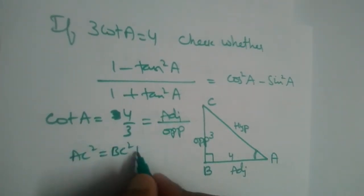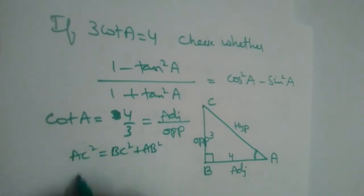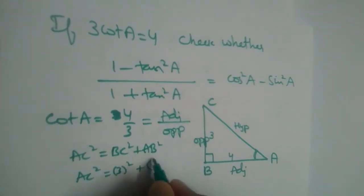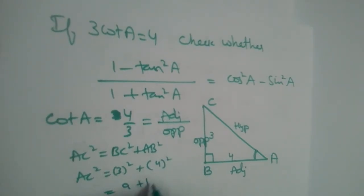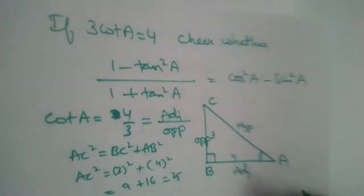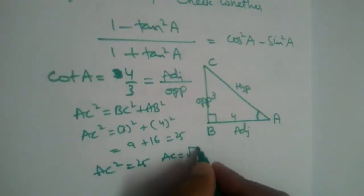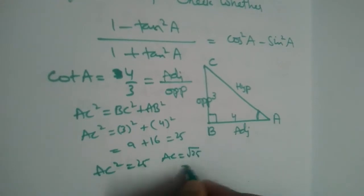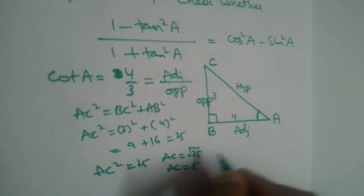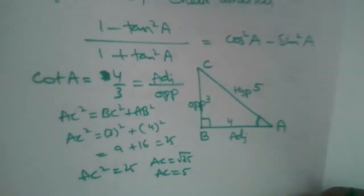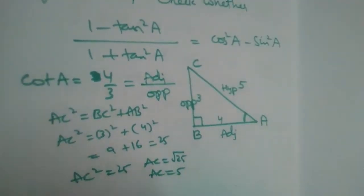Using the Pythagorean theorem: AC² = BC² + AB², so AC² = 3² + 4² = 9 + 16 = 25. Therefore AC = √25 = 5. So the hypotenuse is 5.